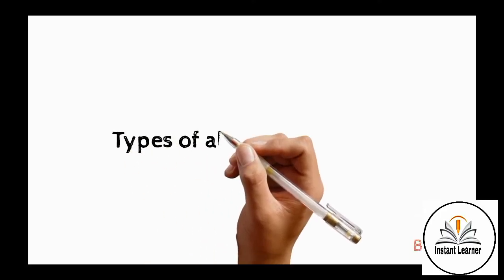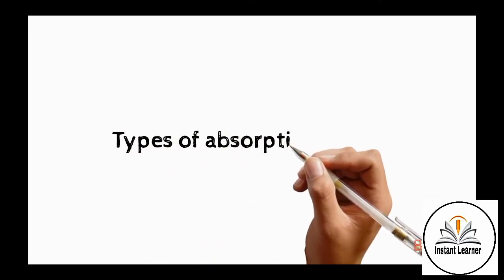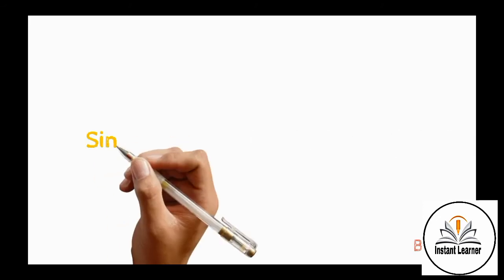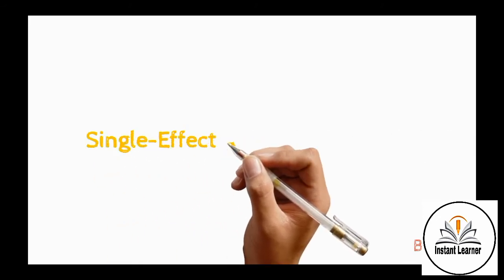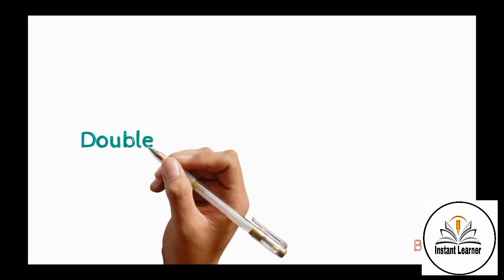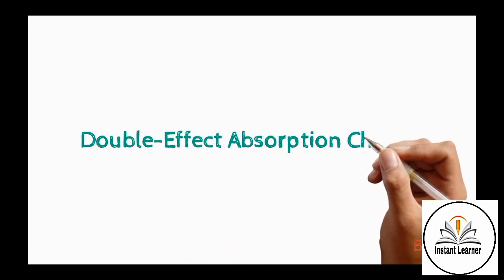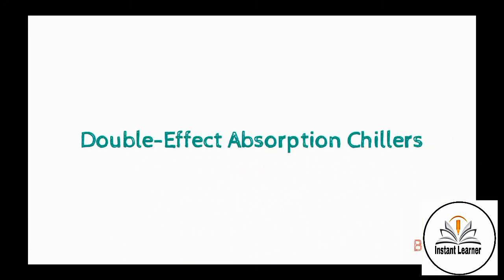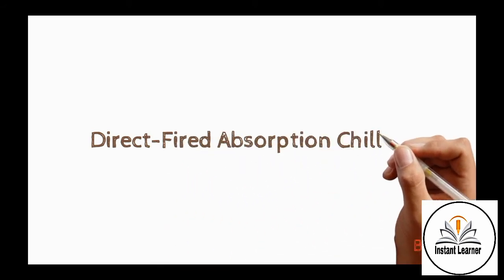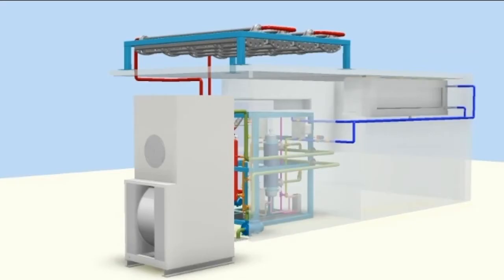Next are the types of Absorption Chillers. There are three types: first, Single Effect Absorption Chiller; second, Double Effect Absorption Chiller; and third, Direct Fire Absorption Chiller. We will now discuss them one by one.